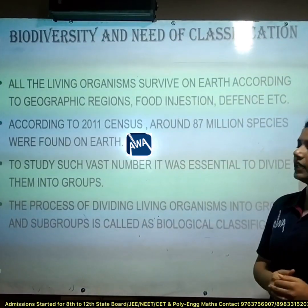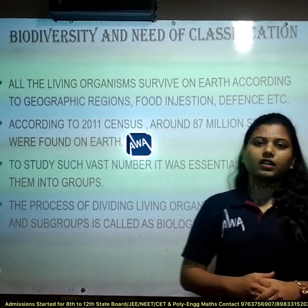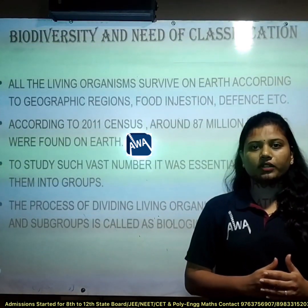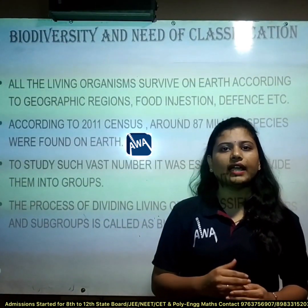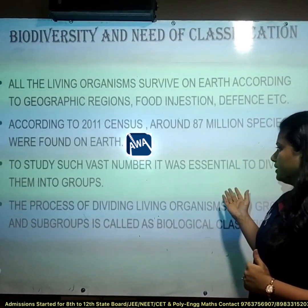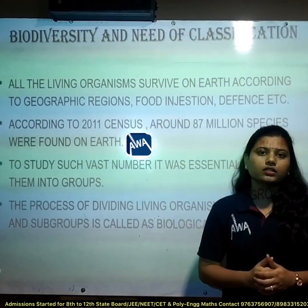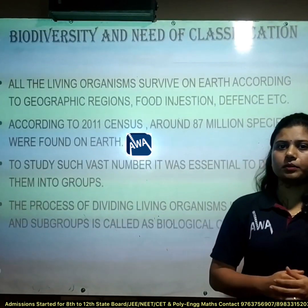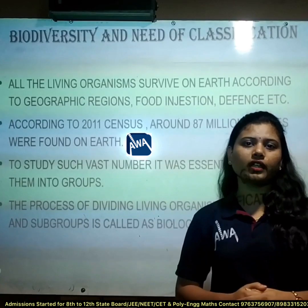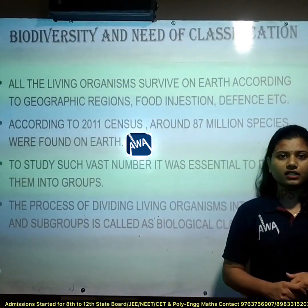According to the 2011 census, around 87 million species were found on the earth, including land and sea. To study such a vast number of species, it was essential to divide them into groups and subgroups. The process of dividing living organisms into groups or subgroups is called biological classification.